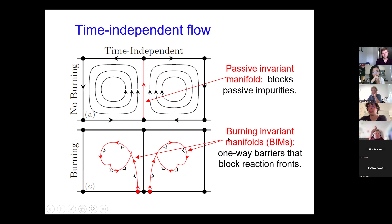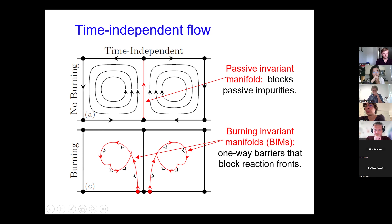If we now think about a chemical reaction in the same fluid flow — imagine triggering a reaction at the bottom fixed point, like lighting a match to our fire. The reaction can move away from that fixed point in the unstable direction, but it can also propagate outward against the incoming fluid flow, until it reaches a point we call a burning fixed point, where the outgoing reaction speed and the incoming fluid speed are the same. The reaction front stops at that point. In the same way that fixed points for the flow have passive manifolds attached to them, these burning fixed points have what we call burning invariant manifolds (BIMs) attached to them.